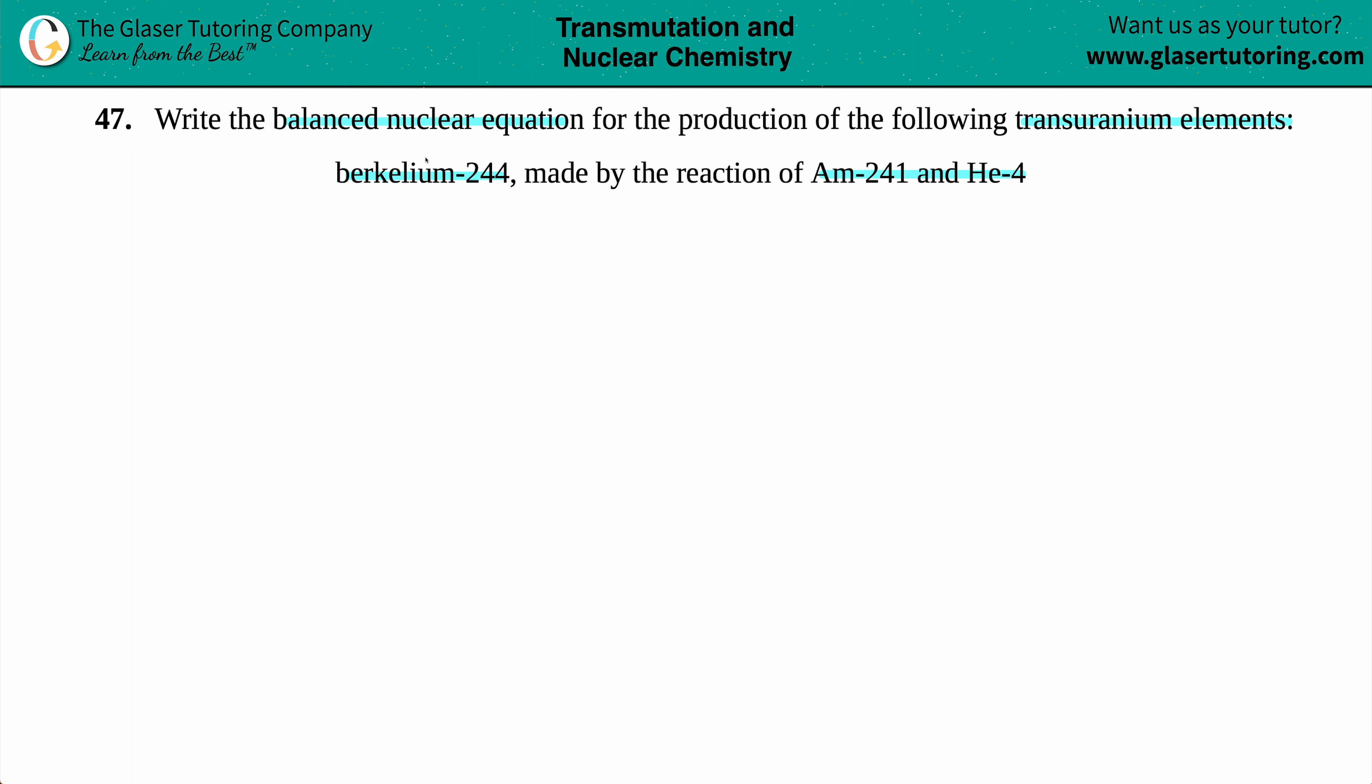Now in this case, it seems like we are producing berkelium. So this wording is telling me that I'm producing berkelium. That's made. So this has to be part of the products. And it's made by the reaction of Am-241, which I believe is americium, and helium-4. So these are your reactants.